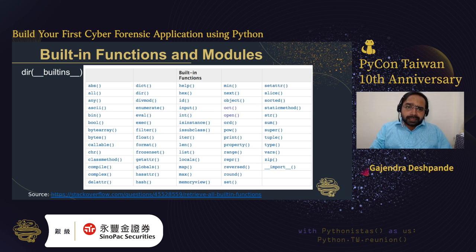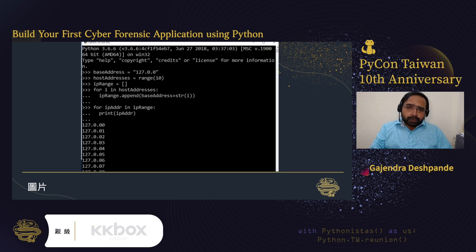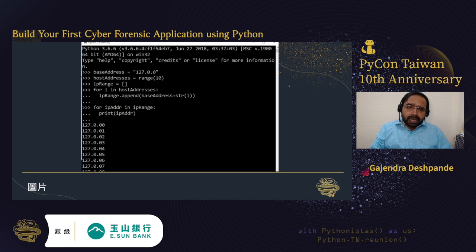Now let us see some built-in functions and modules which can be used to build a simple cyber forensic application. When you type the command dir(__builtins__) it lists the built-in functions in Python. From this list we can use functions such as range for forensic purposes. In the code shown, we define a base address — the local address — then specify a range of 10 to generate 10 IP addresses. You can generate any number of IP addresses using the built-in range function in Python.